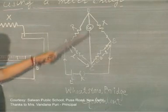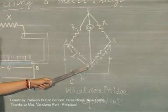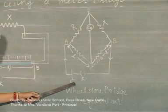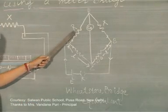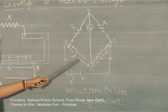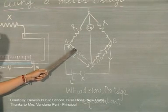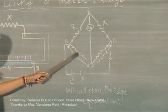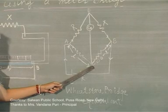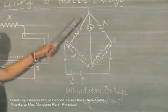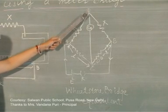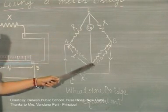Without a galvanometer, DC is like an ordinary wire. Whenever current flows through the cell, it is divided into various arms of the Wheatstone bridge. If you adjust the length L on the meter bridge such that the potential difference at D becomes the same as the potential difference at C, something important happens.